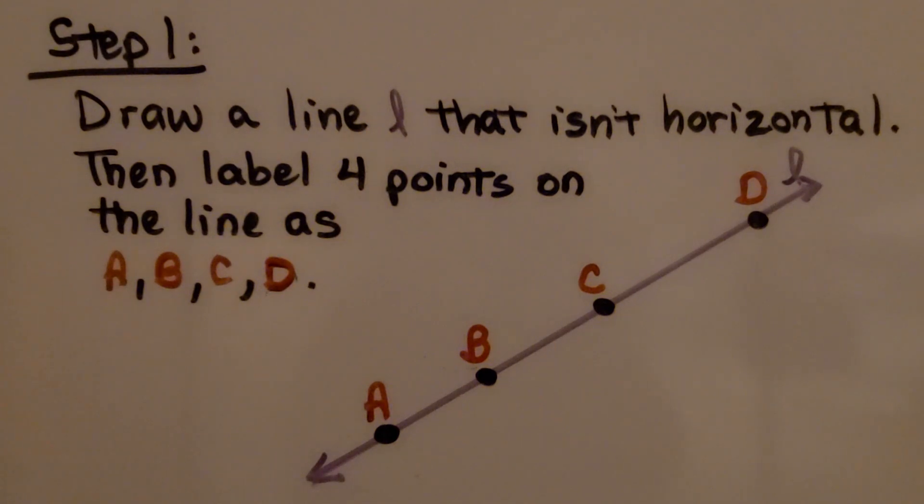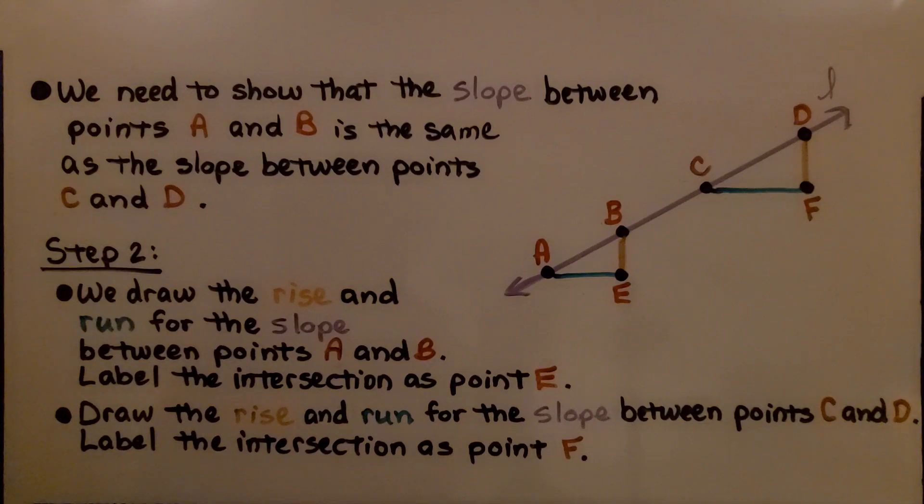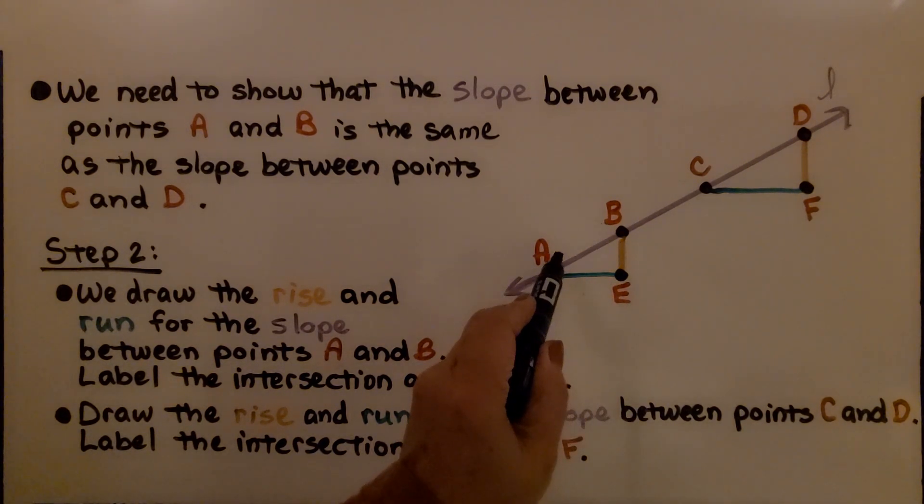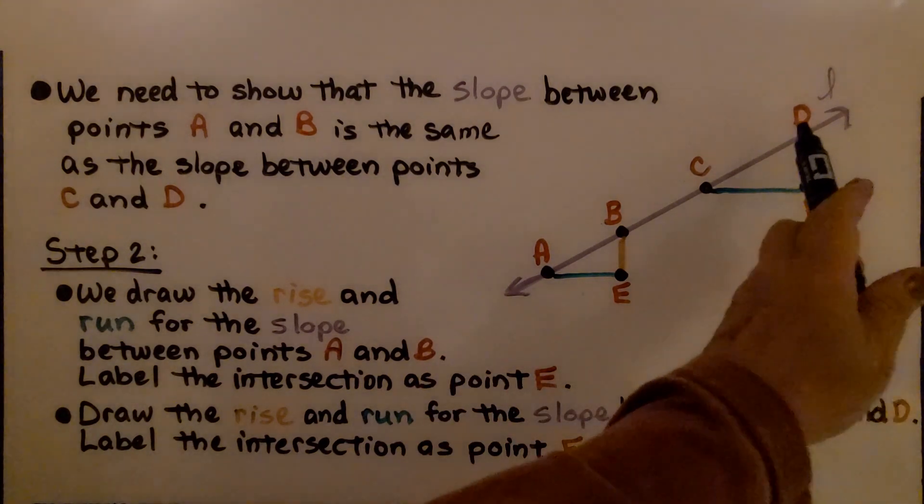We can also do this on a coordinate grid. That might help you understand it more. We need to show that the slope between points A and B is the same as the slope between C and D.